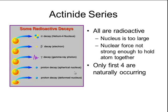Only the first four elements of the actinide series are found in nature: actinium, thorium, protactinium, and uranium. Uranium is the element commonly used in nuclear power plants as a source of energy.